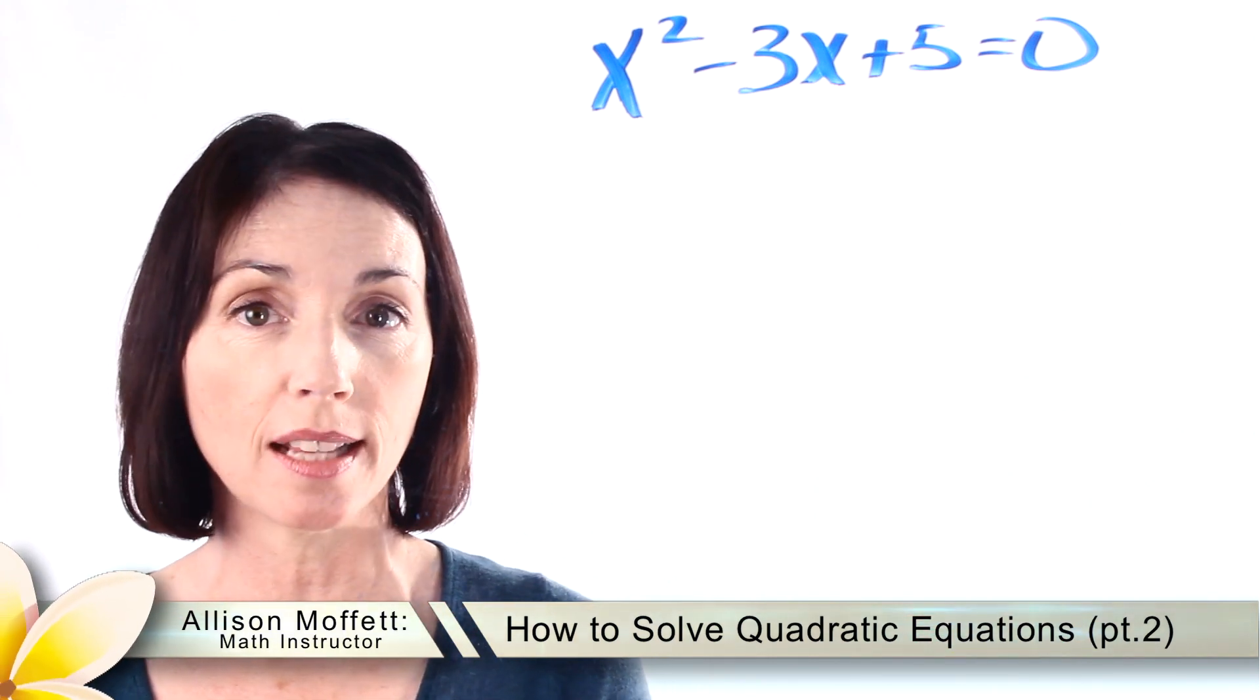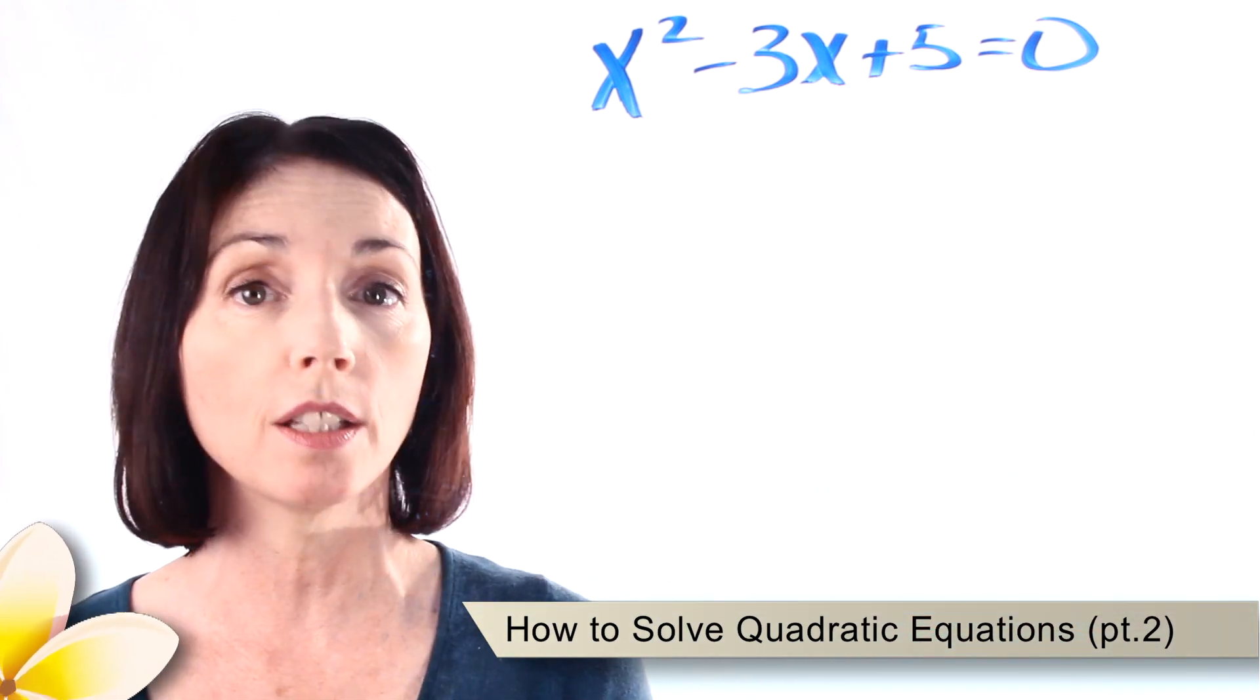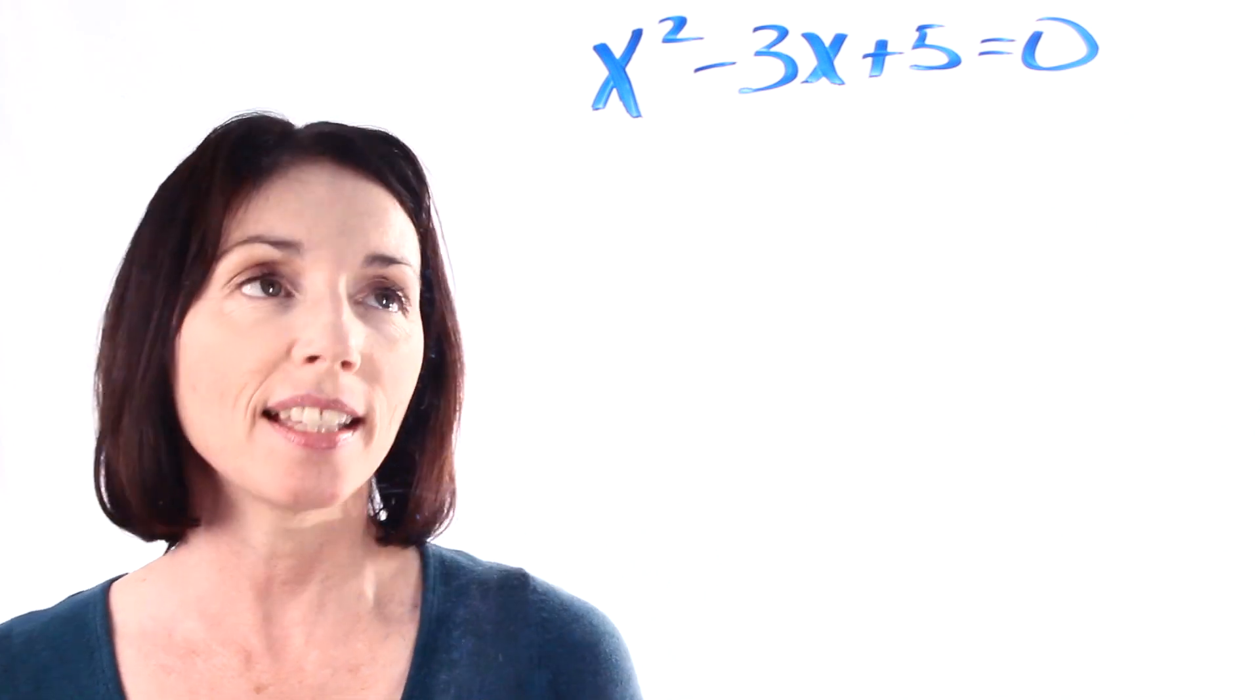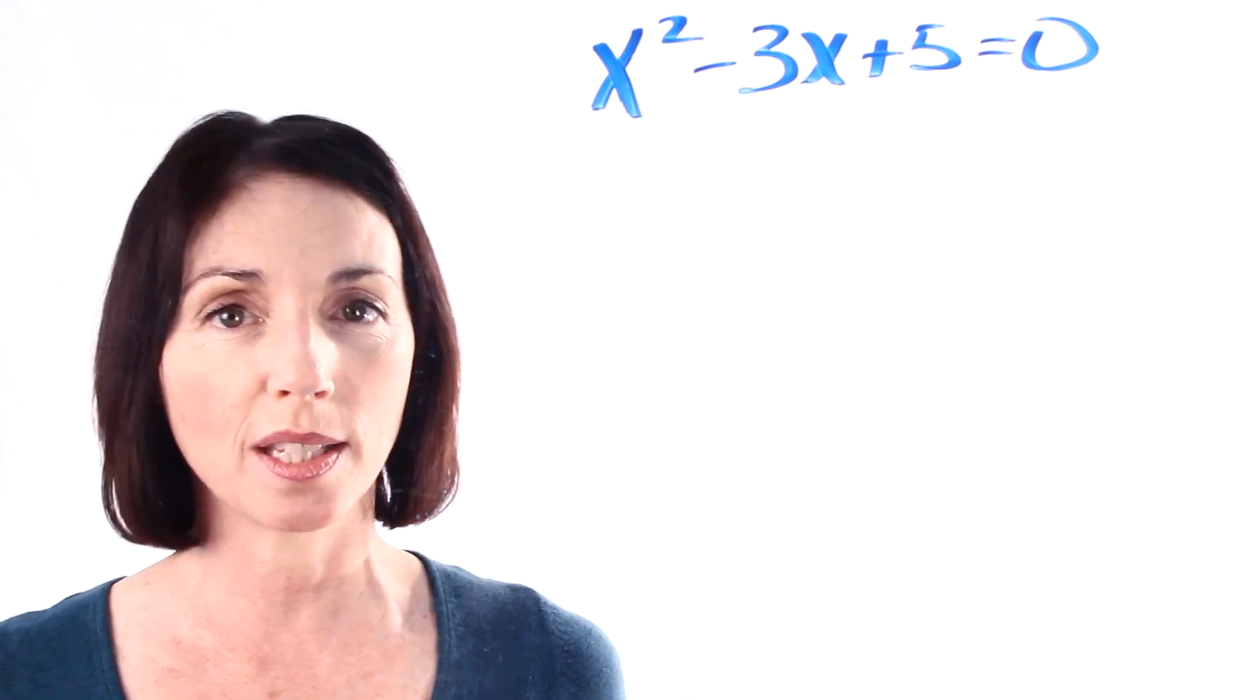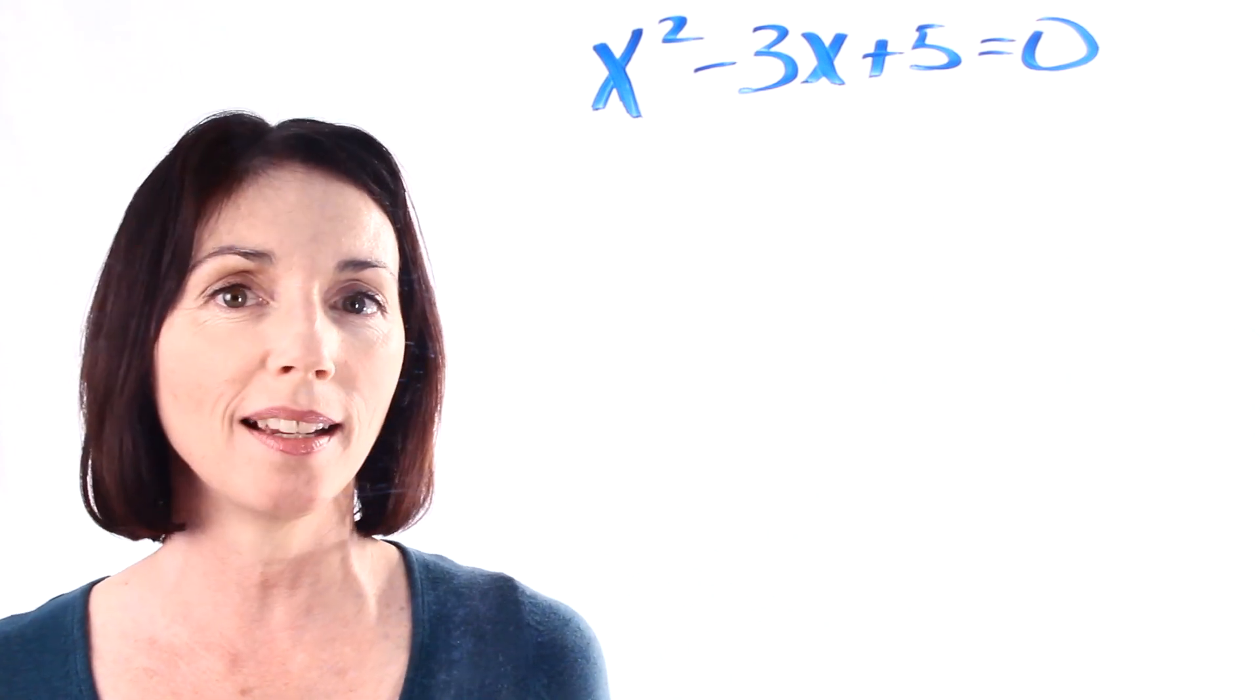Hey it's Allison from Mahalo.com and today we're going to do another example of using the quadratic formula to solve a quadratic equation. This is the equation we'll use: x squared minus 3x plus 5 equals 0. So let's plug it into the formula and see what happens.